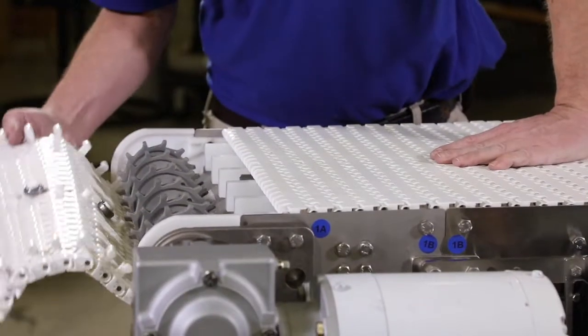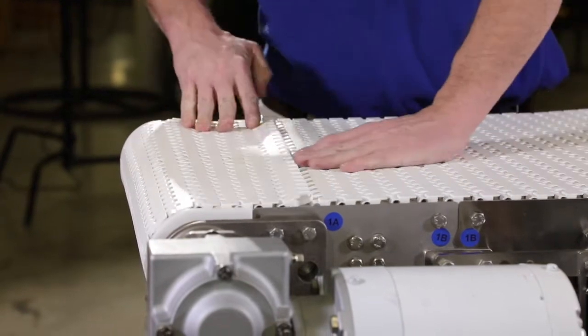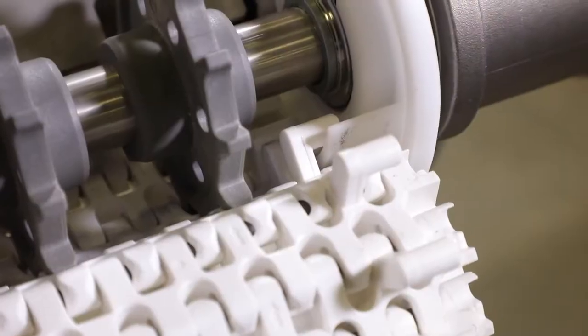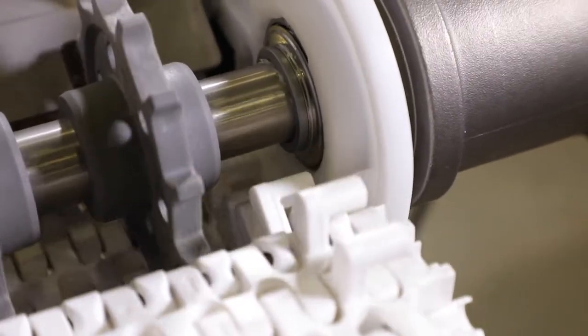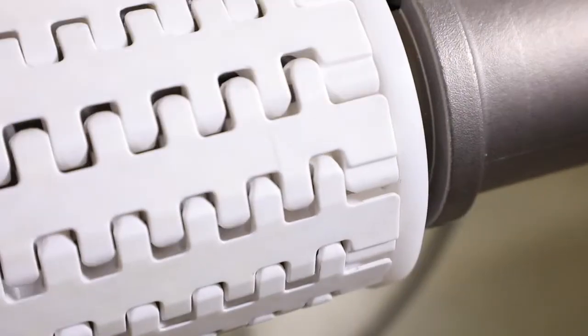Wrap the belt around the idler tail. Ensure the belt tabs are riding on the inside of the head plate channel and the sprocket teeth properly engage with the underside of the belt.